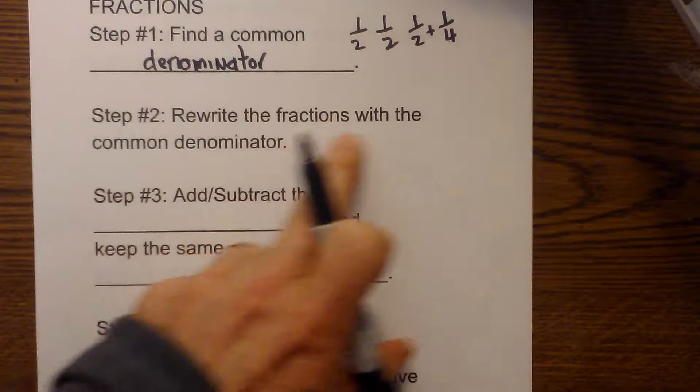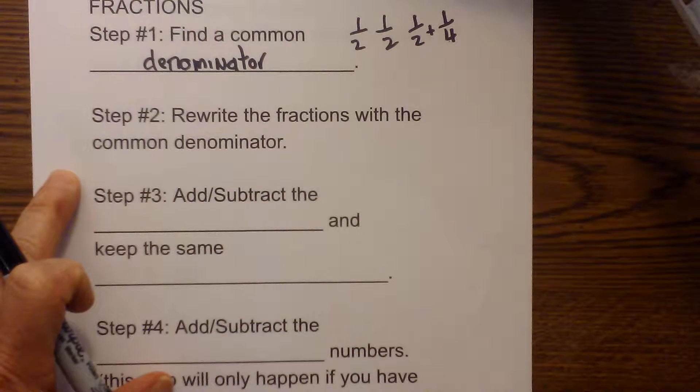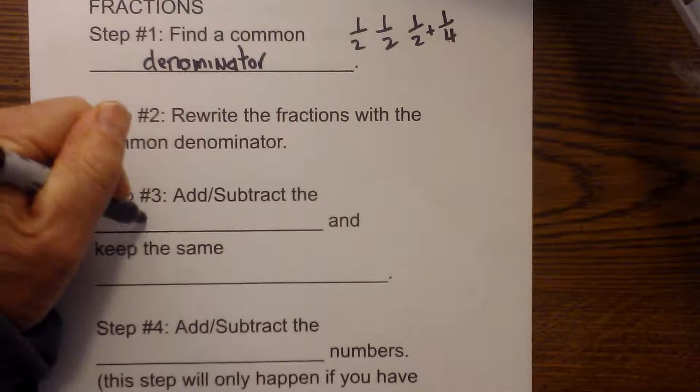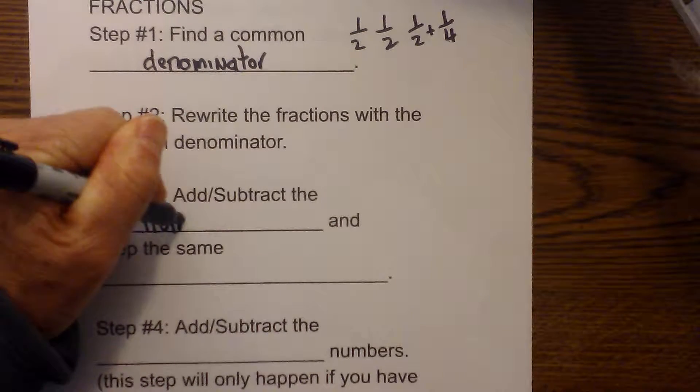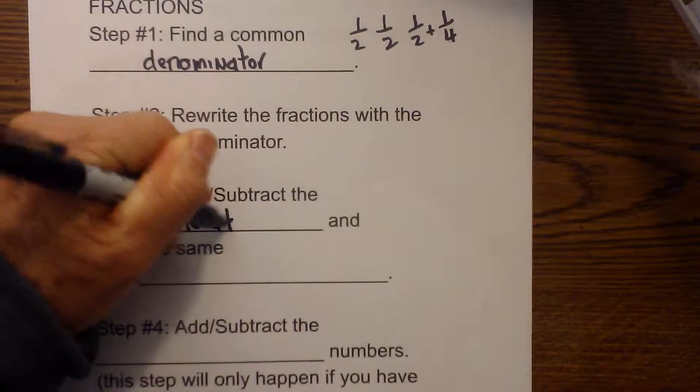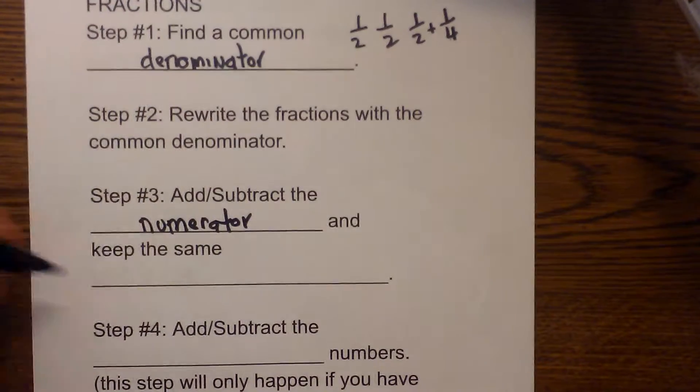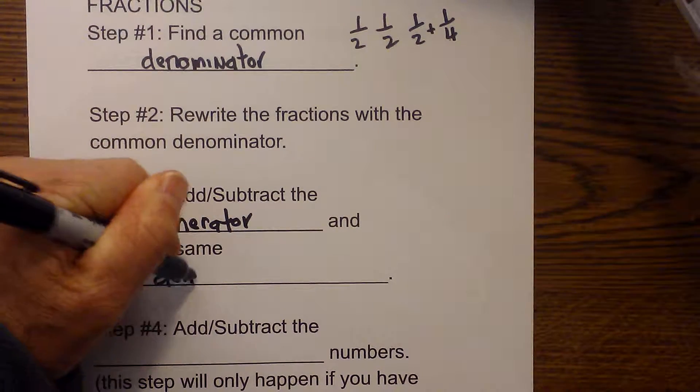Secondly, you have to rewrite the fractions with a common denominator. Third, you subtract the numerator and keep the same denominator.